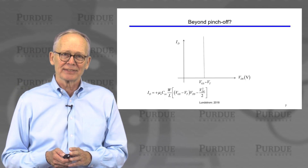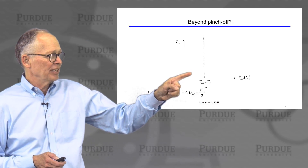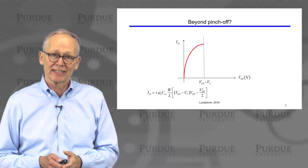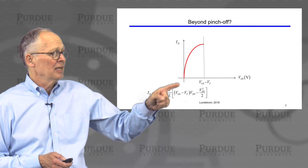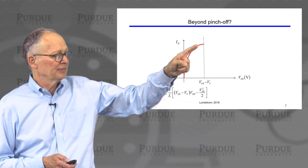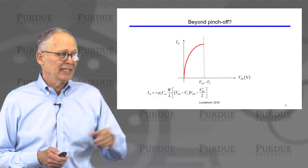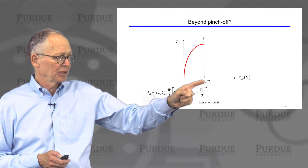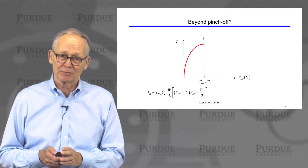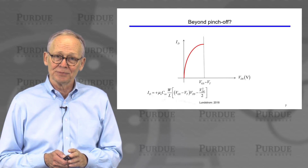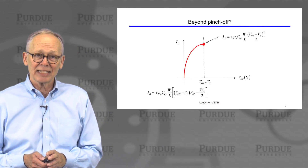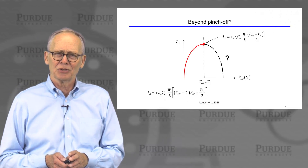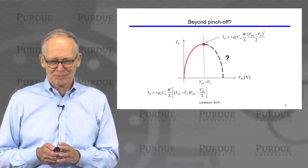Let's plot this characteristic we just derived. If we sweep the drain voltage up to V_GS minus V_T, we get a curve. Once the drain voltage hits V_GS minus V_T, the slope of this curve becomes zero. As the drain voltage gets bigger, the current would roll off, and at this critical voltage V_G minus V_T we reach a maximum. Now the question is: do we continue using that expression, where the current would turn around and go down? That doesn't seem right — and in fact, it's not right.